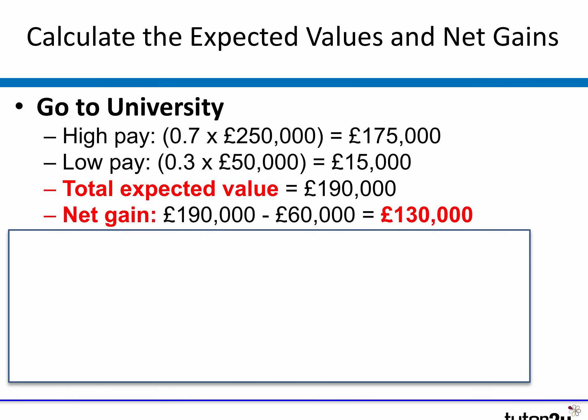Have a go at calculating the expected value. I've done the first one for you. If he goes to uni, we simply multiply the probabilities by the financial results: 0.7 times £250,000, plus 0.3 times £50,000. Add those together and you get an expected value of £190,000. But don't forget to knock off the cost of that option — £190,000 minus £60,000 gives a net gain of £130,000. Now pause the video and have a go at calculating the expected value and net gain for the apprenticeship.